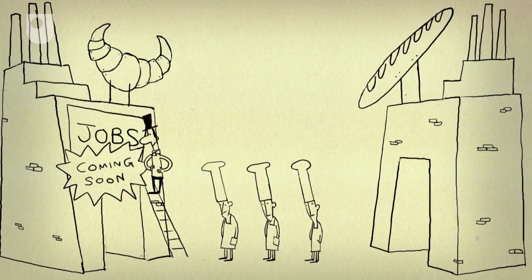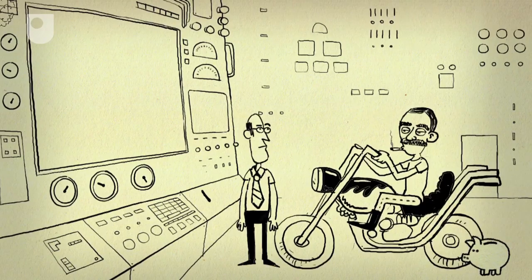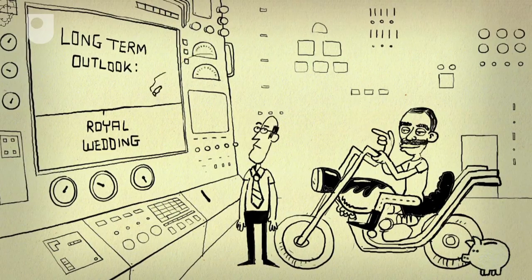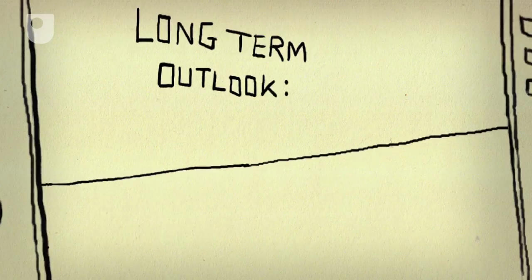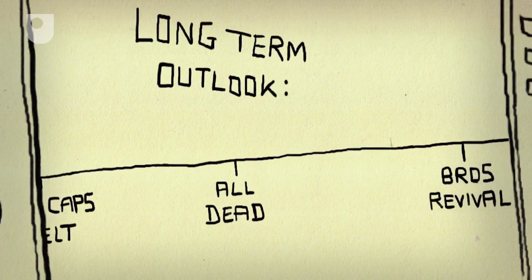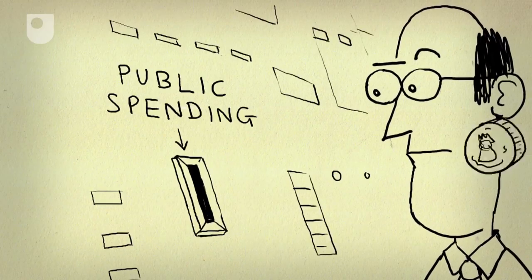But then a live-fast-die-young kind of chap called John Maynard Keynes cheerfully pointed out that in the long run we're all dead. So to avoid the misery of unemployment, the government should instead spend money to create jobs.